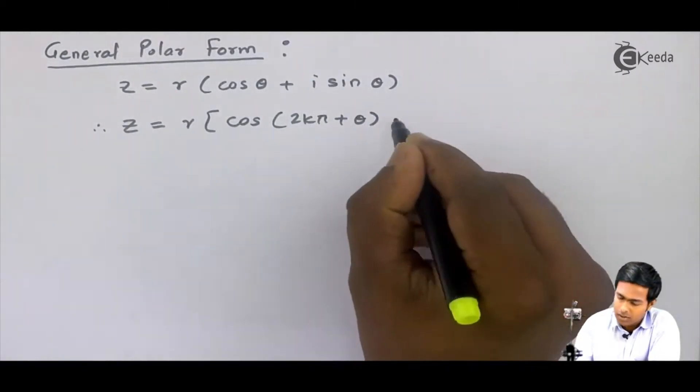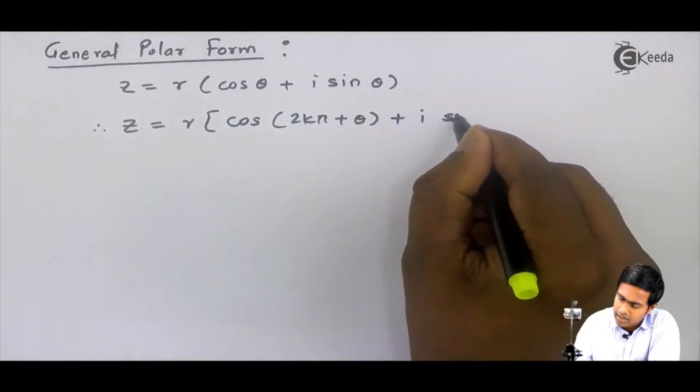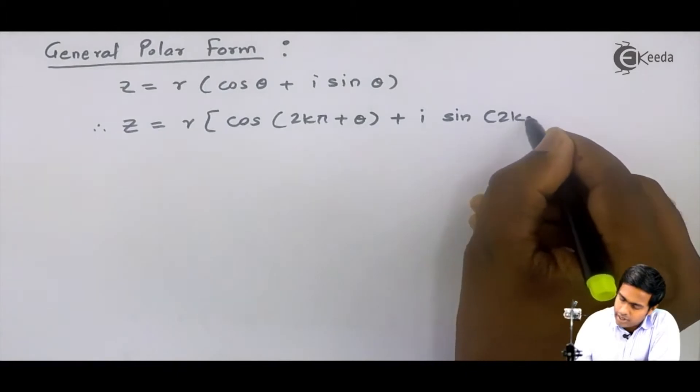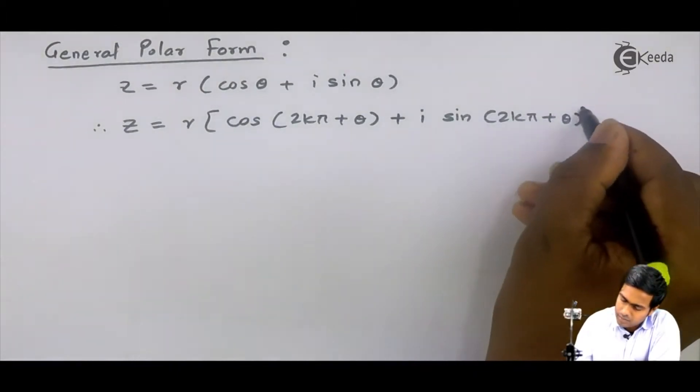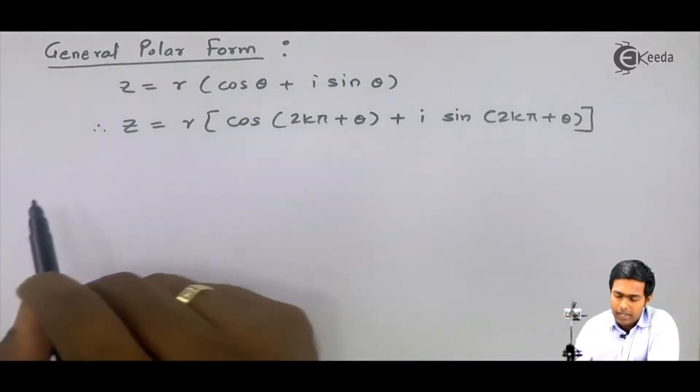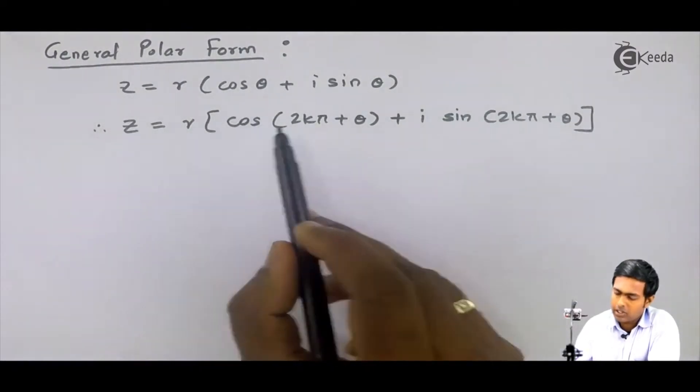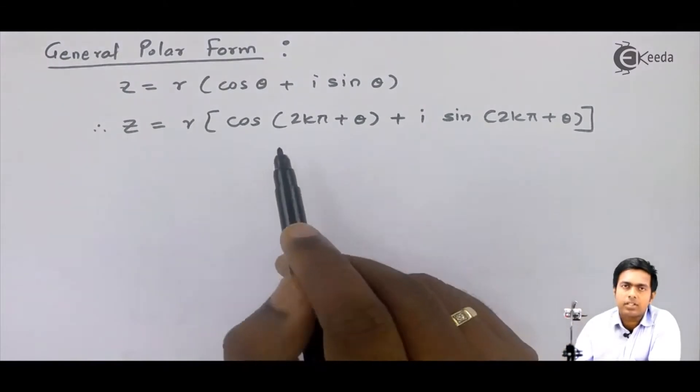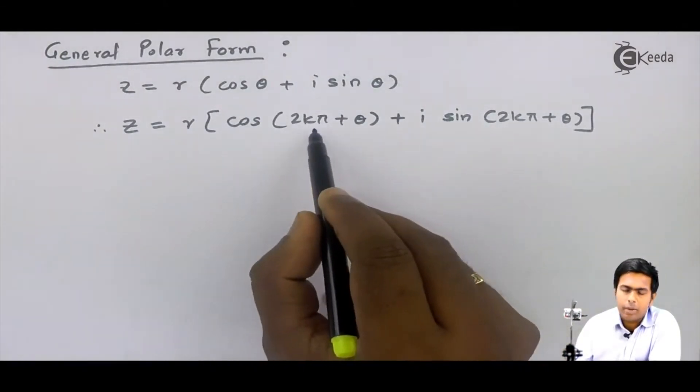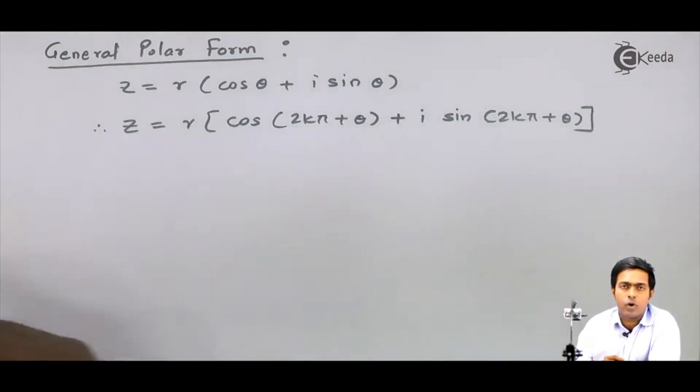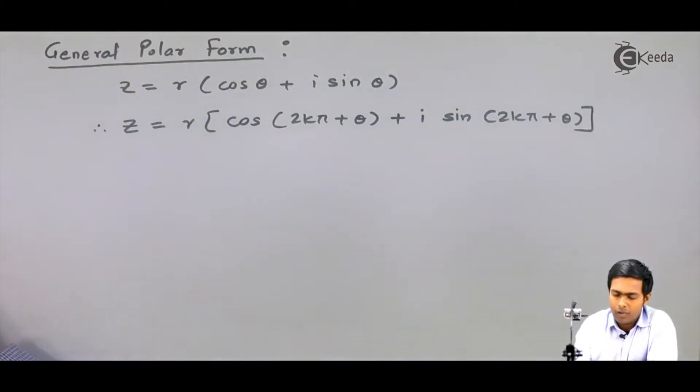Here you can observe that I have added 2kπ in cos as well as in sine, which means I am adding 2kπ in the amplitude of the complex number. Now why is it called a general polar form? Let's understand it.